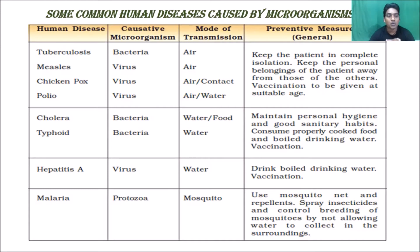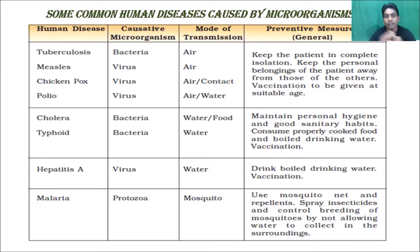A current example of a viral disease spread all over the globe is coronavirus. For this also, the same principles apply — home isolation, avoiding physical contact with others. It is very important to keep these measures in mind when coming across such infections. Now coming to water-transmitted diseases.